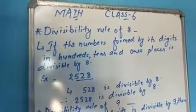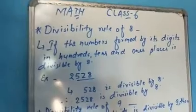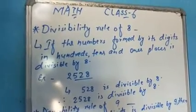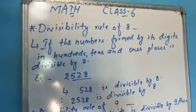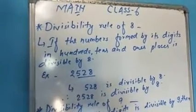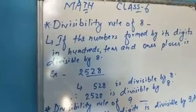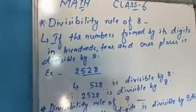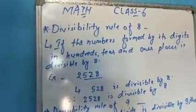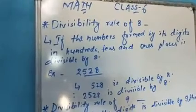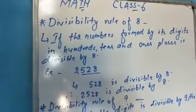For example, 2528. This is a 4-digit number. We take the last 3 digits, which forms 528. We will check if 528 is divisible by 8. If 528 is divisible by 8, then the entire number 2528 is divisible by 8.